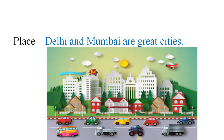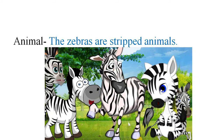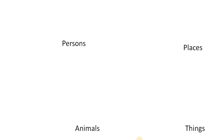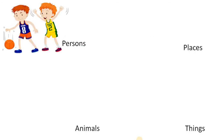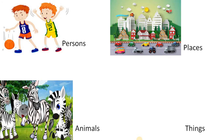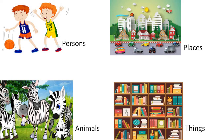For place: Delhi and Mumbai are great cities. Delhi and Mumbai are the names of two cities, so for two we use 'are'. For animal: The zebras are striped animals — there are many zebras, so we use 'are'. For thing: The books are in the cupboard — there are many books in the cupboard, so we use 'are'.